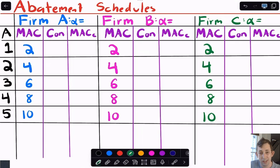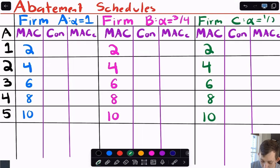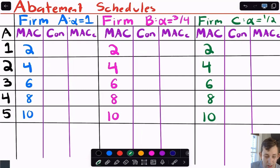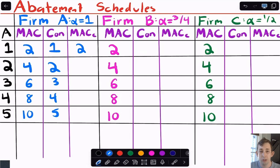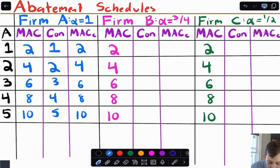Let's work through this with a table. Firm A has alpha = 1, firm B has alpha = 3/4, and firm C has alpha = 1/2. All three firms have the same abatement cost structure: abatement of 1, 2, 3, 4, or 5 tons. Since firm A has a one-to-one relationship, concentration reduction equals emissions reduction, so their MAC for concentration is the same as for emissions: 2, 4, 6, 8, 10.